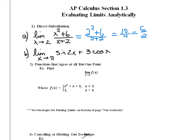Let's try a trigonometric one. We've got the limit as x approaches pi of the sine of 2x plus 3 cosine x. So go ahead and substitute pi in. This is going to be equal to the sine of 2pi plus 3 times the cosine of pi.